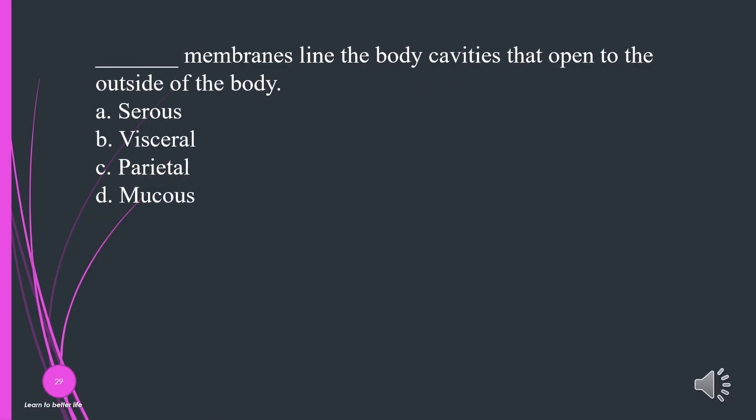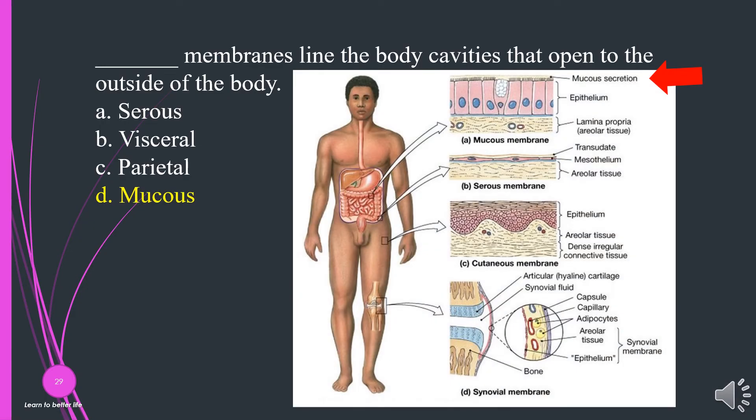What membranes line the body cavities that open to the outside of the body? A. Serous. B. Visceral. C. Parietal. D. Mucous. The answer is D, mucous.